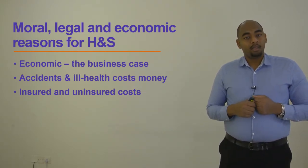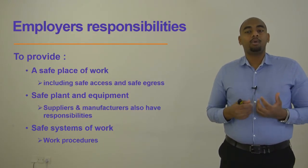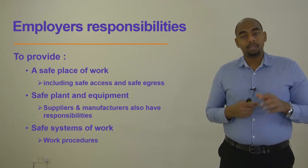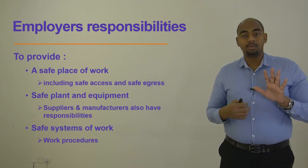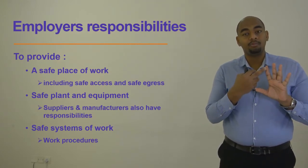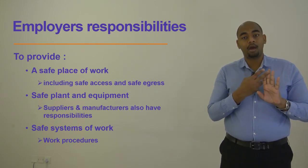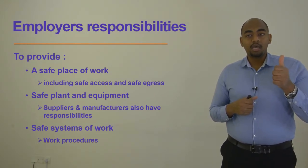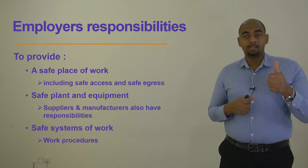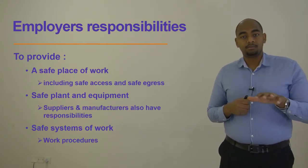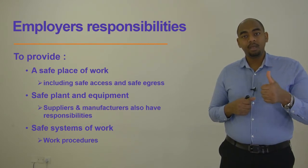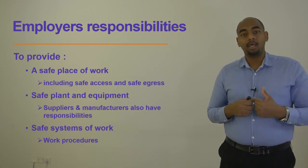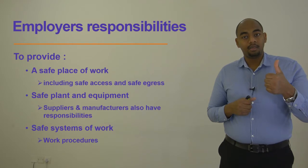Regarding employer responsibilities, an employer has mainly five different responsibilities. They have to provide a safe work location, safe plant and equipment, and a safe system of work. A safe work location includes safe access and safe egress from the workplace, safe premises, and all assets within the work location must be safe, whether from the employer's, manufacturer's, or supplier's responsibility.